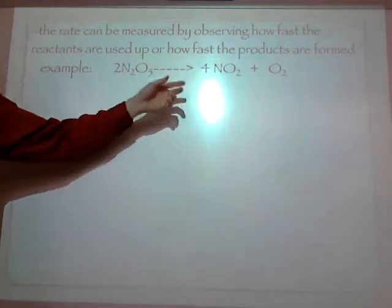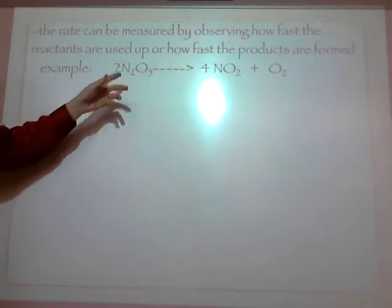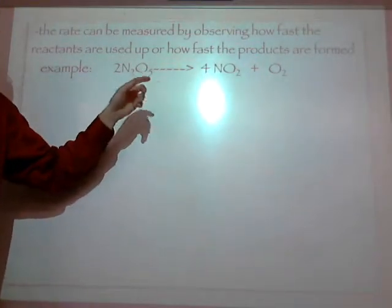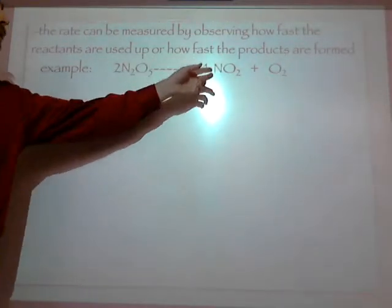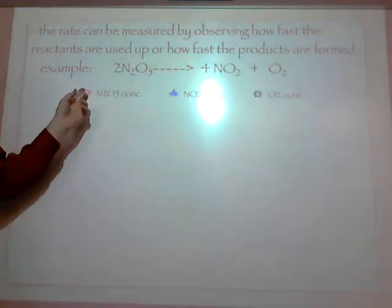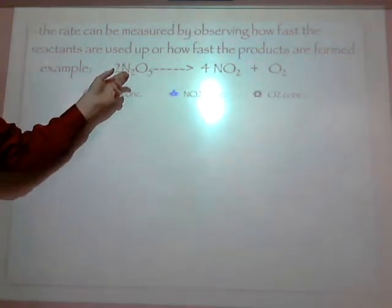I'm going to use different colors to make it a little easier for you to see. But underneath this, I want you to use different things representing each of these chemicals. A circle will represent the N₂O₅.